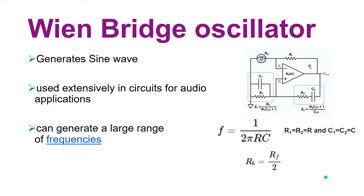The inverting amplifier with negative feedback produces an output 180° phase shifted with respect to the differential input Vid. The gain is set by the resistor ratio Rf and Rb, and we generally choose Rb to be less than half the value of Rf. When we select R1 = R2 = R and C1 = C2 = C, the frequency of oscillation is given by 1 over 2πRC.